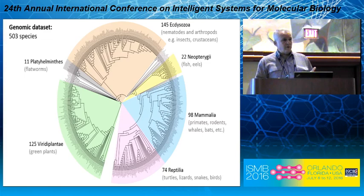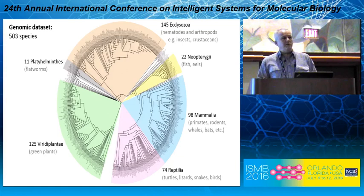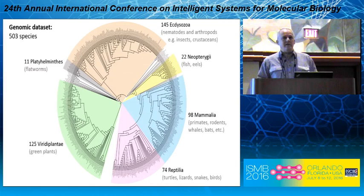We started with known L1 sequences that we had either identified or were in RepBase. We aligned them to all the genomes. Everything we pulled out, we clustered and then globally aligned, and created a consensus. We stuck those consensus sequences back in as queries and redid the process — iterating until we didn't recover any more repetitive elements once we had exhaustively sampled those genomes.